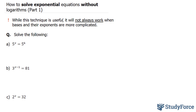Solve the following. In part A, they want us to solve for x given the following equation. Notice that on the left side we have 5 to the power of x, and on the right side we have 5 to the power of 6. Since both of these bases are the same, you can make the exponents equal to each other. So the exponent here is x, and I'm going to make that equal to the exponent 6. Therefore x is equal to 6.